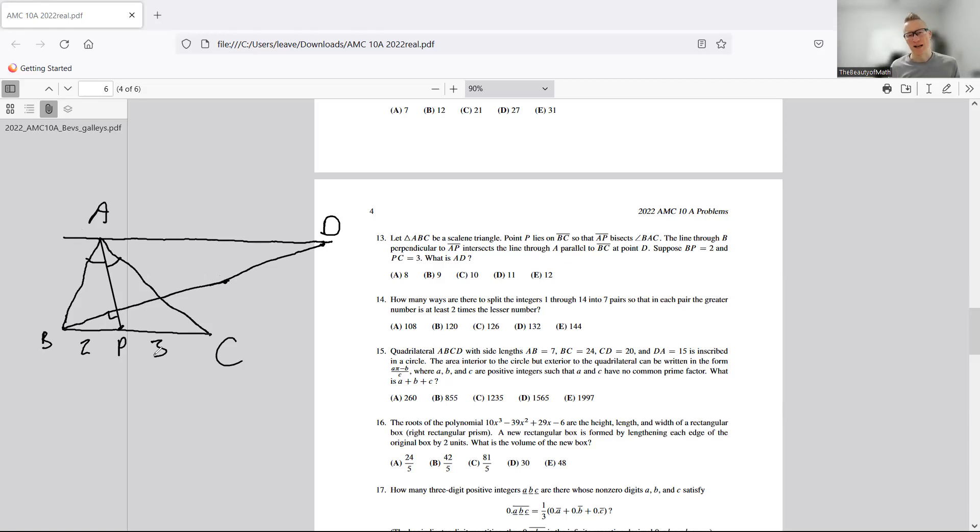Suppose BP equals two and PC equals three. So here's the things that you want to ask. Let's talk about the detective aspect. You need to be asking three questions right now, primarily: one, why angle bisector? Why? We need to be answering this question. Two, why perpendicular? Three, why parallel? In other words, the part that's parallel, why is it parallel? The part that's perpendicular, why is it perpendicular? What are they trying to tell us with these things?